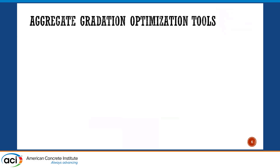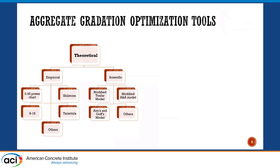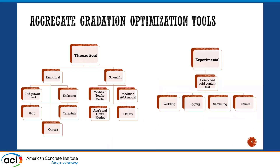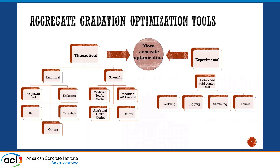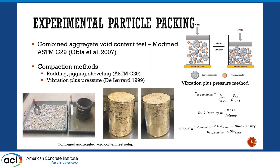Looking at the tools we have: on the theoretical side, we have everything from the old 0.45 power curve to the new triangular curve, as well as theoretical models like the modified TOEFL model and the modified A&A model. On the other hand, we have experimental methods — you can measure void content using ASTM C29. Everyone knows that. But we can do combined aggregate: combine coarse and fine aggregate, and through that determine whether we have real optimization.